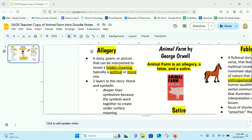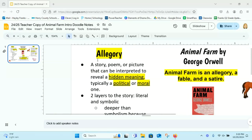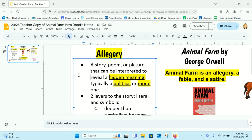We're going to start with allegory. I'm going to zoom in over here under allegory. Allegory is a story, poem, or picture that can be interpreted to reveal a hidden meaning, typically a political or moral one. What that means is that it has two layers.